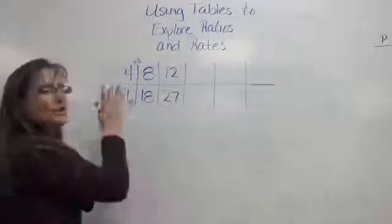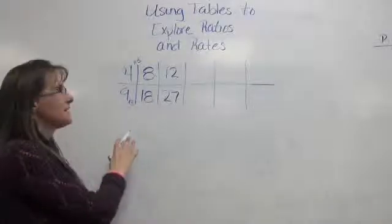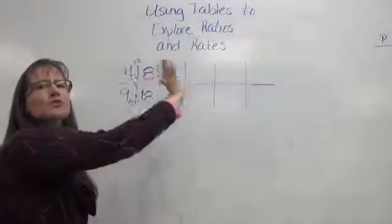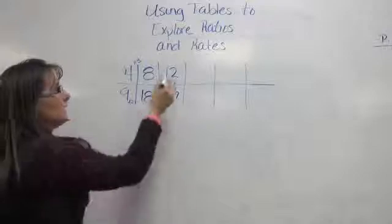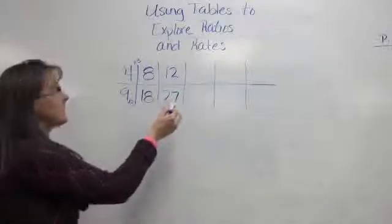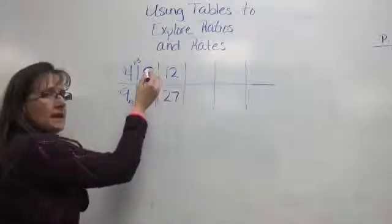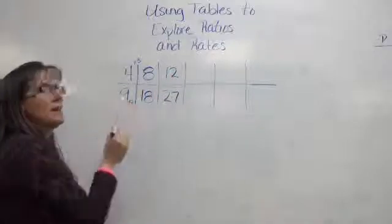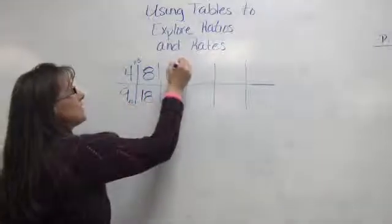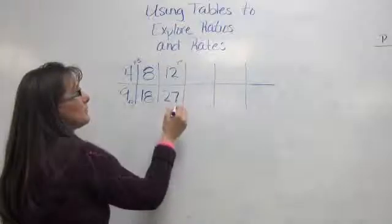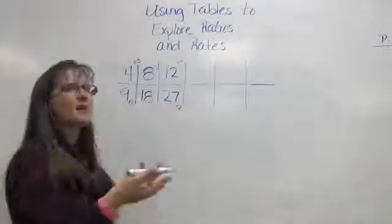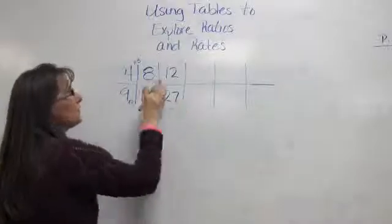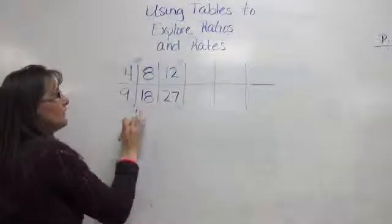The reason that I want you to go back to the original fraction is because if you start making these ones larger, your numbers are going to get really big. 12 twenty-sevenths is the same thing as 8 eighteenths, which is the same thing as 4 ninths. But if I chose to take 12 times 2 and 27 times 2, I'm going to get really big numbers. So again, go back to your original ratio.